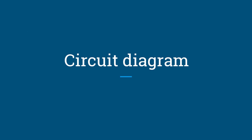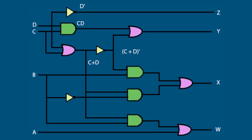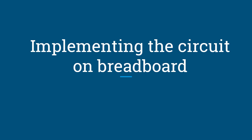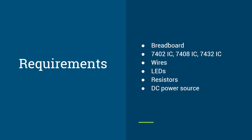Now let's make the circuit for the obtained expressions on a breadboard. We take ABCD as input and WXYZ as output, and try to minimize the circuit as much as possible. The circuit diagram uses four AND gates, four OR gates, and three NOT gates, meaning we only need three ICs: one AND gate IC, one OR gate IC, and one NOT gate IC. That's the minimum circuit we can make.